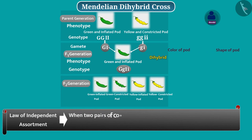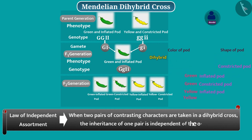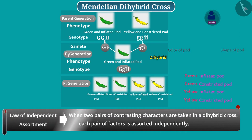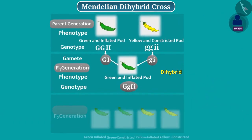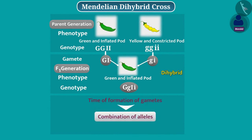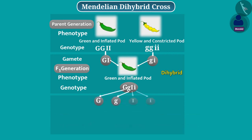According to the law of independent assortment, when two pairs of contrasting characters are taken in a dihybrid cross, the inheritance of one pair is independent of the other. Each pair of factors is assorted independently. The genotype of the dihybrid plant shows that at the time of gamete formation, the combination of alleles occurs such that each gamete receives only one allele for each character. Since alleles of two characters are present, they are assorted independently and four types of gametes are formed.